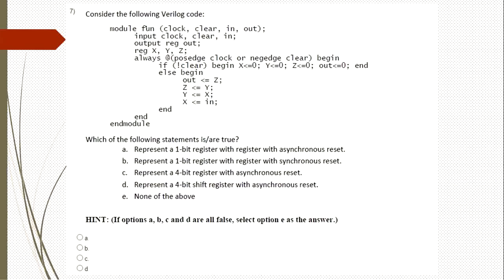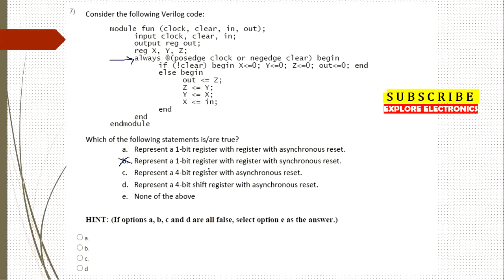The seventh question: given the Verilog module with clock and clear inputs, always triggered at positive edge of clock or negative edge of clear. By looking at the always statement, since clear is not synchronized with the clock — it responds to the negative edge of clear independently — this is an asynchronous reset. Non-blocking assignments are used. The second option representing synchronous reset is ruled out.